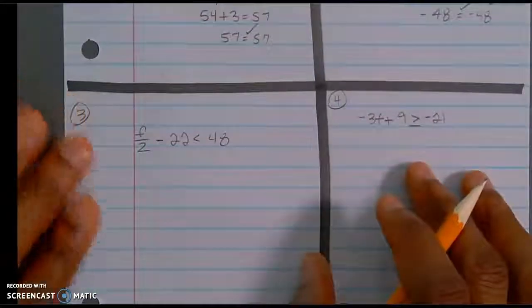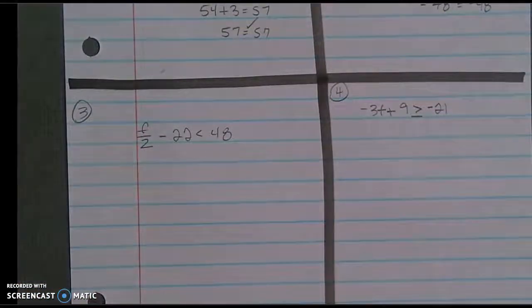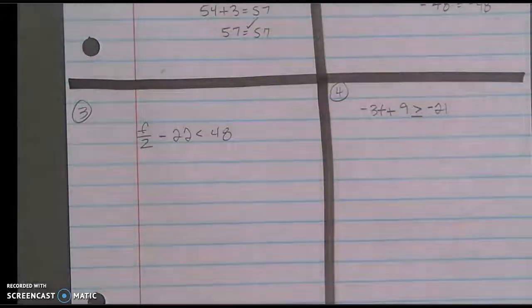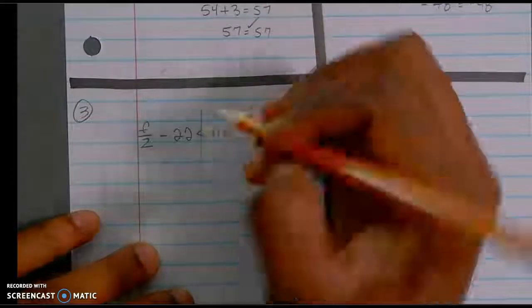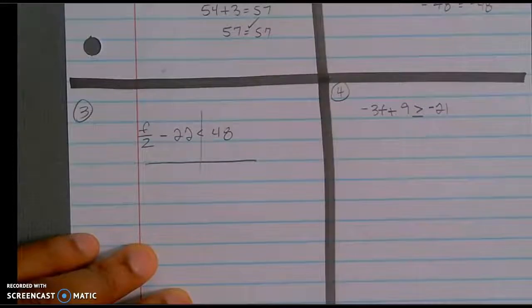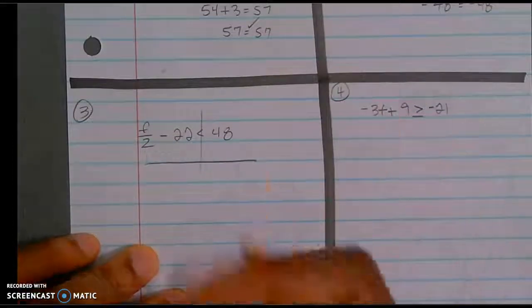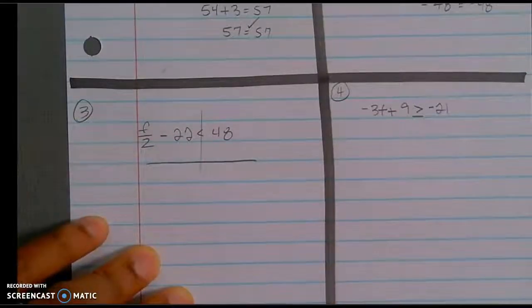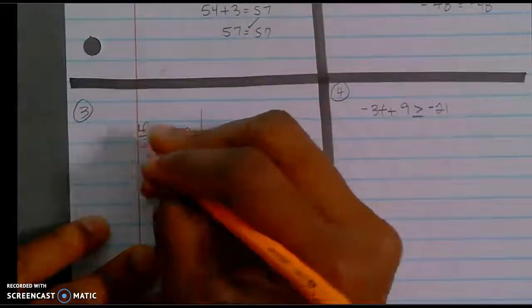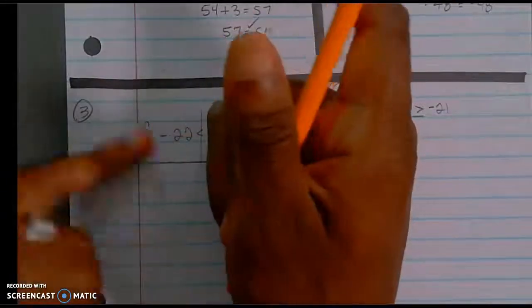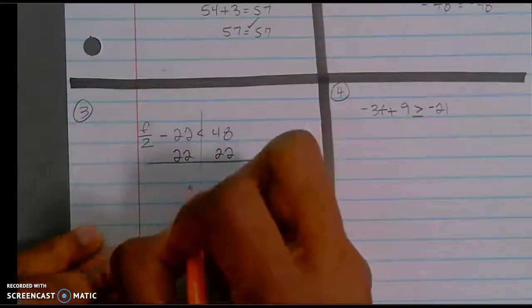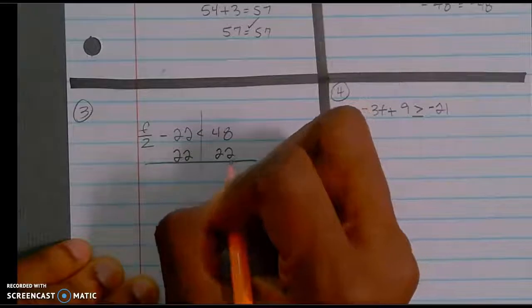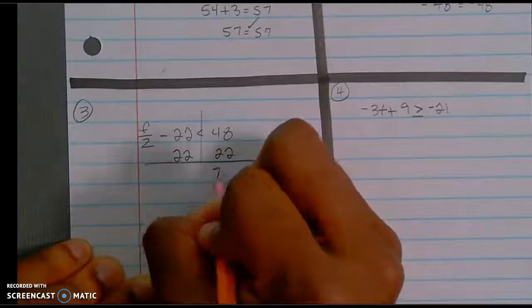Moving right along to inequalities. An inequality by definition means the sign indicates these are not equal. At this point I have a fraction with my coefficient — this is going to be a little trickier than the others. Let's draw our line here and separate what's on one side of the inequality symbol from the other. In order to get this variable and coefficient isolated — for the record, the coefficient is going to be one half; when you have a letter over a number there's an assumed one, so that becomes one half — let's add 22 to both sides. Adding 22 to both sides gives us 70.